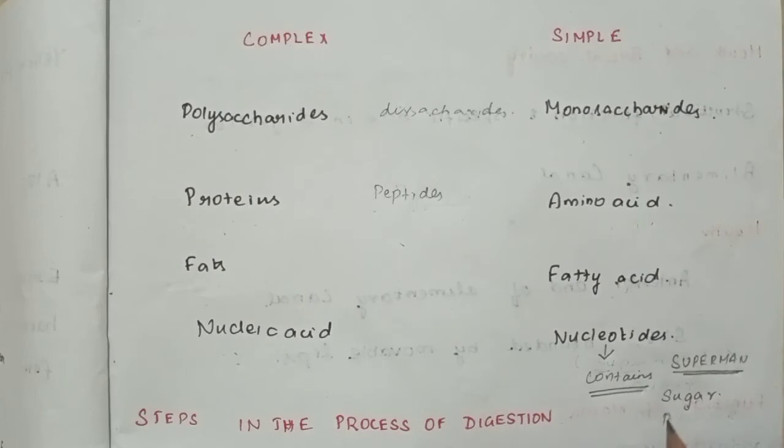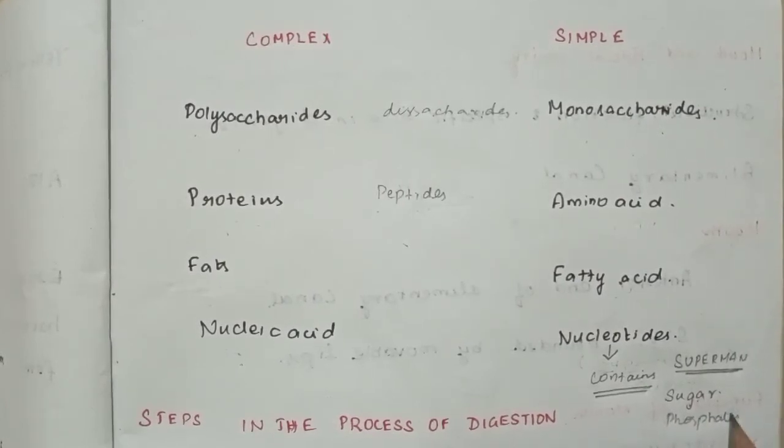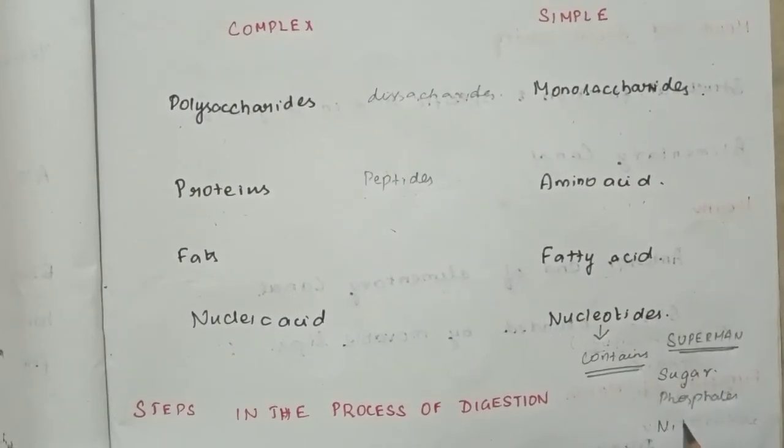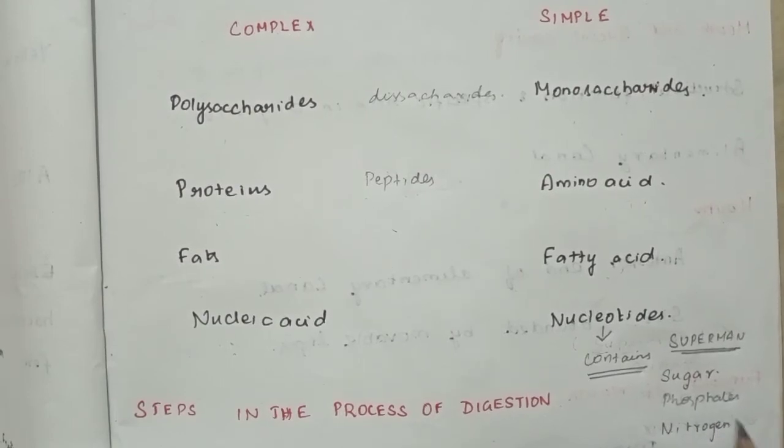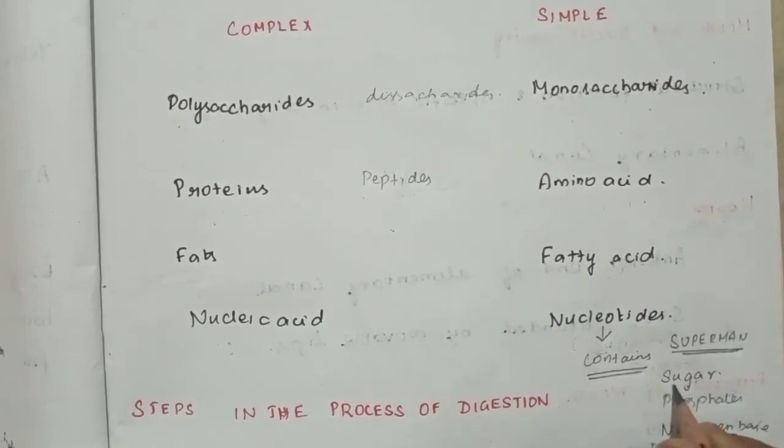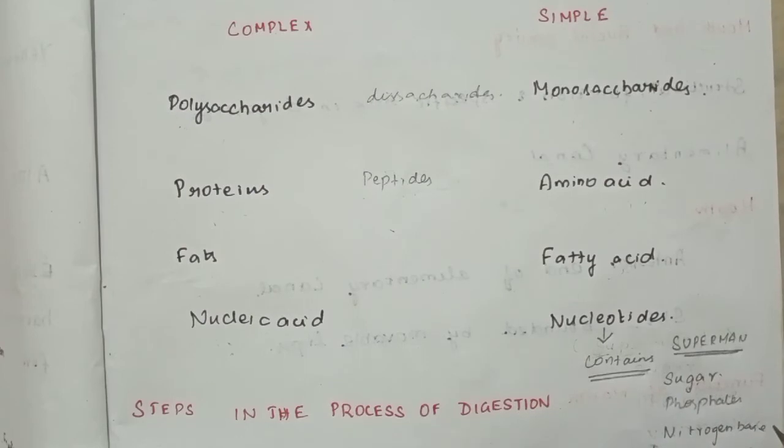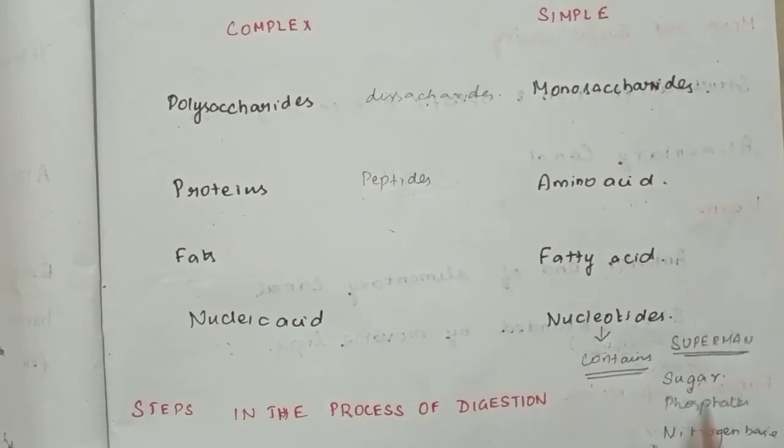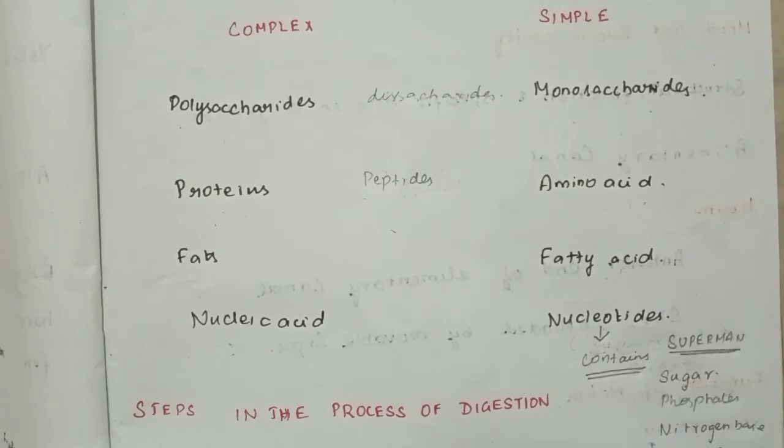Nucleotides contain - this is in short form - sugar, phosphates, and nitrogen base. So nucleotides contain sugar, phosphates, and nitrogen base.